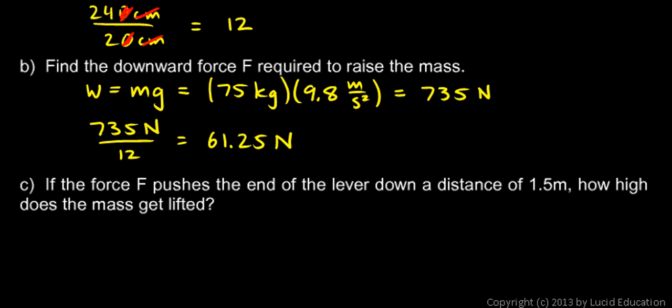Well, the lever has a mechanical advantage of 12, so the distance through which the output force moves is only one-twelfth of the distance of the input force. So if the input force moves through a distance of 1.5 meters, the output force or the mass being lifted is only going to be one-twelfth of that.